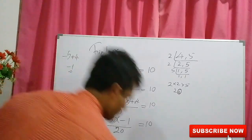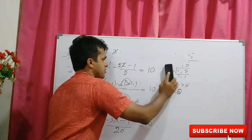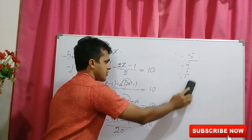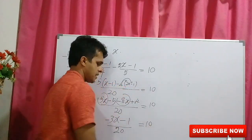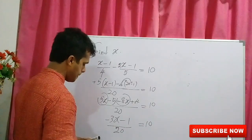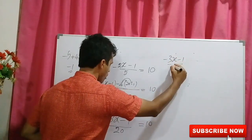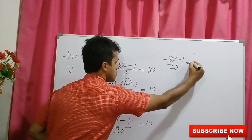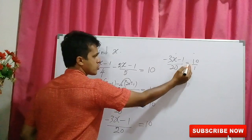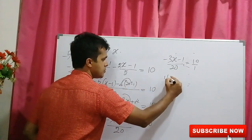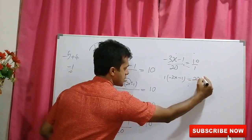Now, how could you take the value of x? You can cross multiply. The taken step. Negative 3x, negative 1 over 20 equals to 10. You know here 10 over 1. Now, cross multiply. 1 times negative 3x, negative 1 equals to 20 times 10.